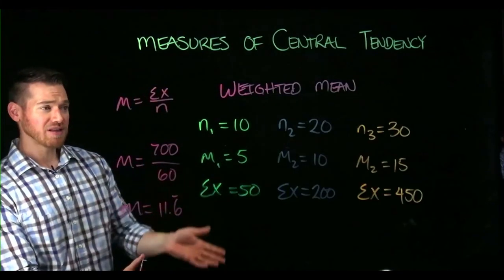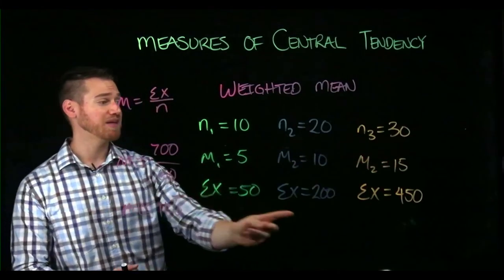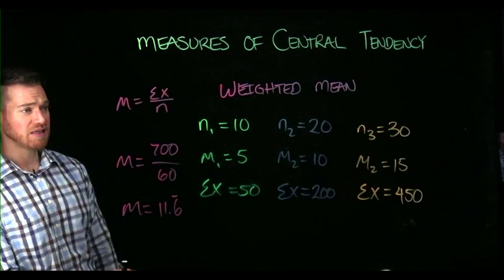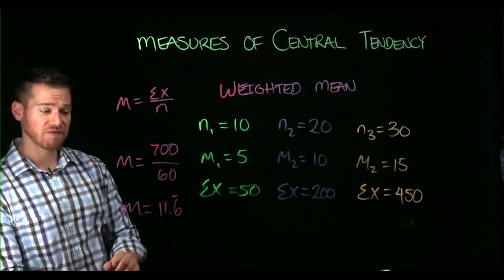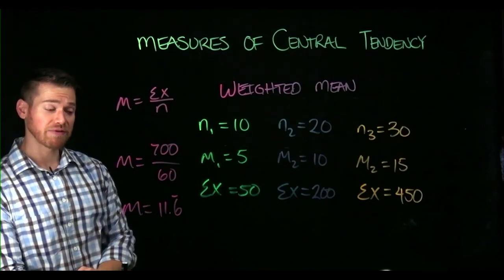So beyond that, we can then say, well, the mean is going to be closer to 15 than it is to 5 because that sample is the largest. And in fact, that's what we see from that midpoint that it is closer to 15 than it is to 5. So this makes good sense that our weighted mean here would be 11.6.